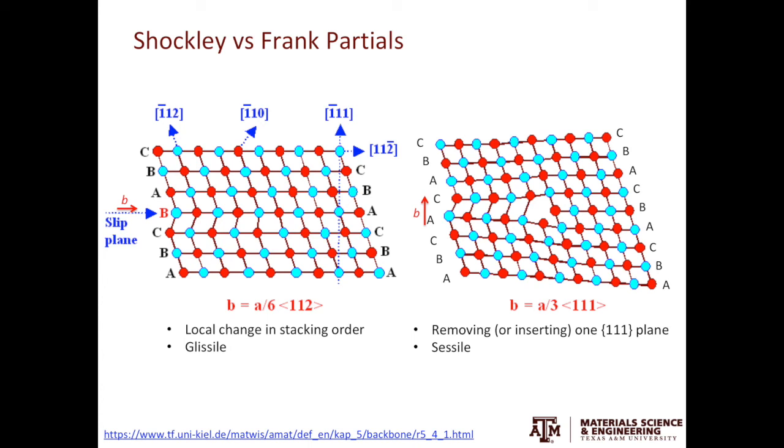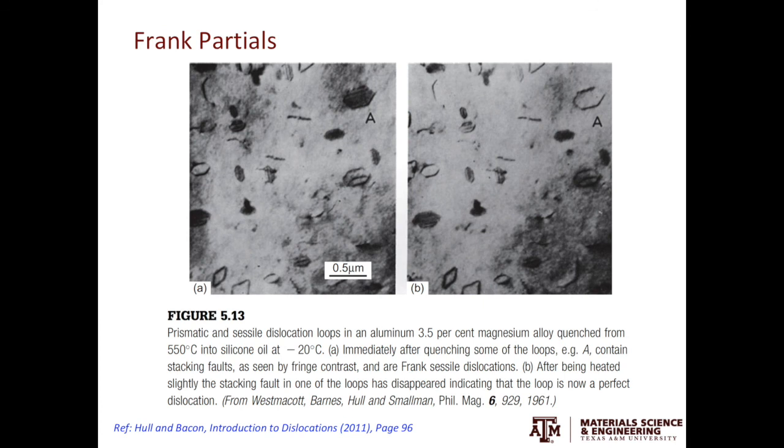We also learned we see Shockley partials in FCC metals with low stacking fault energy. Then when do we see Frank partials? Frank partials are usually observed in samples either being irradiated at high temperature or quenched from a high temperature. At high temperature or in the irradiative environment, large amounts of point defects such as vacancies can be generated. These vacancies can self-organize to form vacancy clusters, then collapse to form those Frank partials. I took this example from the Introduction to Dislocations book, and here you can see the Frank partial dislocations as well as stacking faults bound by those partials.